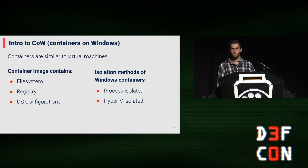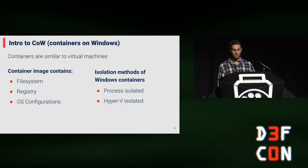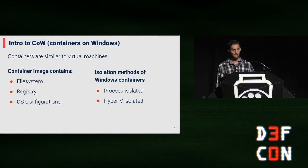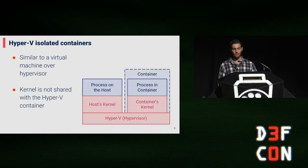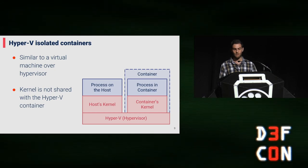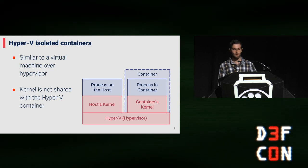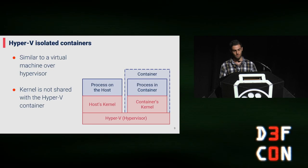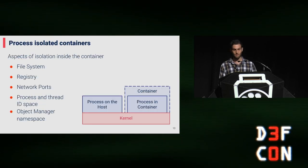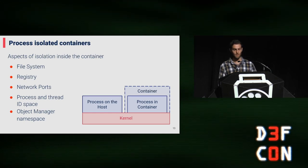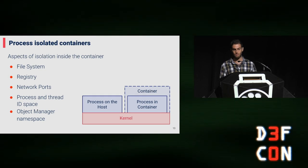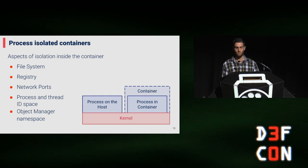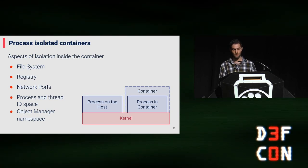Windows containers can be deployed in two modes: process isolated and Hyper-V isolation, which defines the isolation they will be executed on. Hyper-V containers are very similar to virtual machines — each container has its own kernel and can't interact directly with the host kernel, which means they are more secure but come with computational overhead. Process isolated containers are similar to Linux containers; the entire container runs from user mode and interacts with the host kernel, but is isolated via multiple aspects.